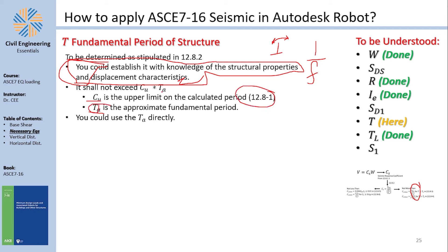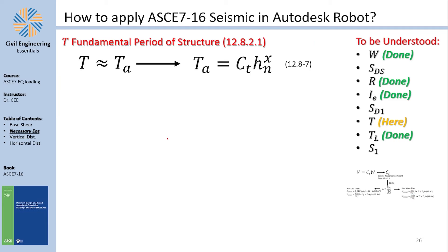Per section 12.8.2, the approximate period TA can be used directly. TA is calculated using equation 12.8-7: TA = CT × HN^x, where HN is the structural height and x is an exponent. This is the code's built-in approximation of the fundamental period.